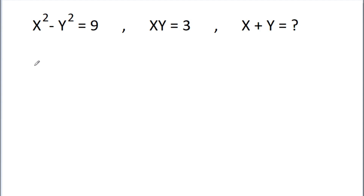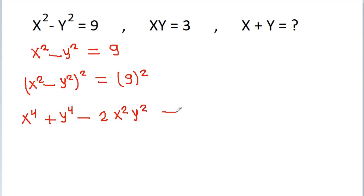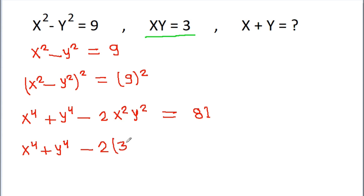Here it is given that x squared minus y squared is equal to 9, and if we square both sides, then we get x squared minus y squared, whole squared, is equal to 9 squared. So x squared minus y squared, whole squared, gives x to the power 4 minus y to the power 4 minus 2 times x squared times y squared, equal to 81. Since xy equals 3, x squared y squared equals 9, so we get x to the power 4 minus y to the power 4 equal to 81 plus 18, which is 99.